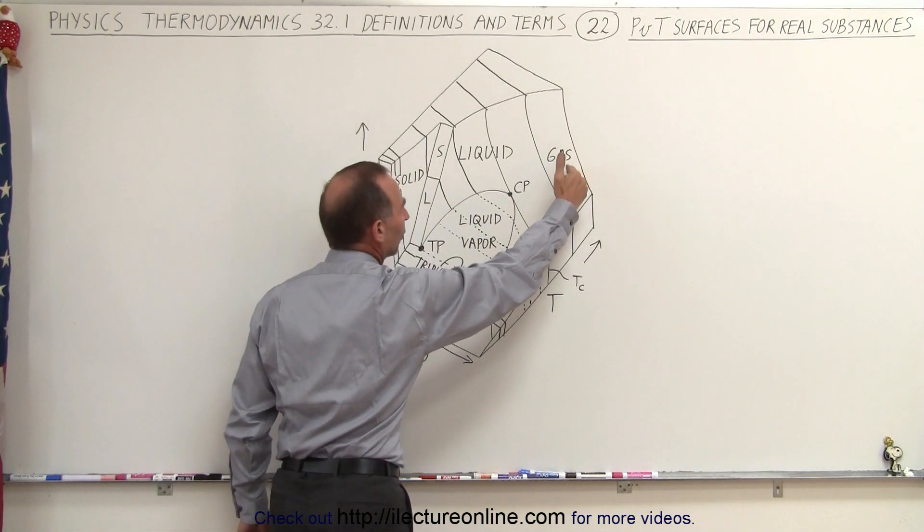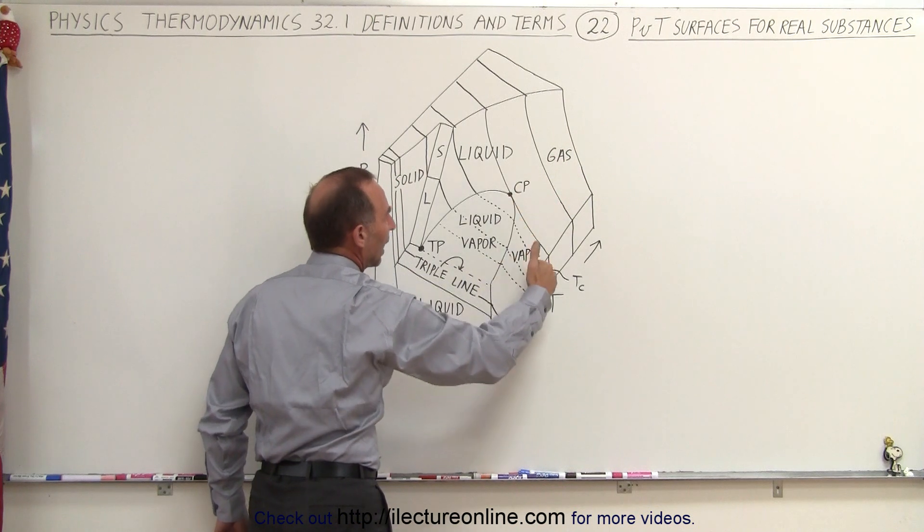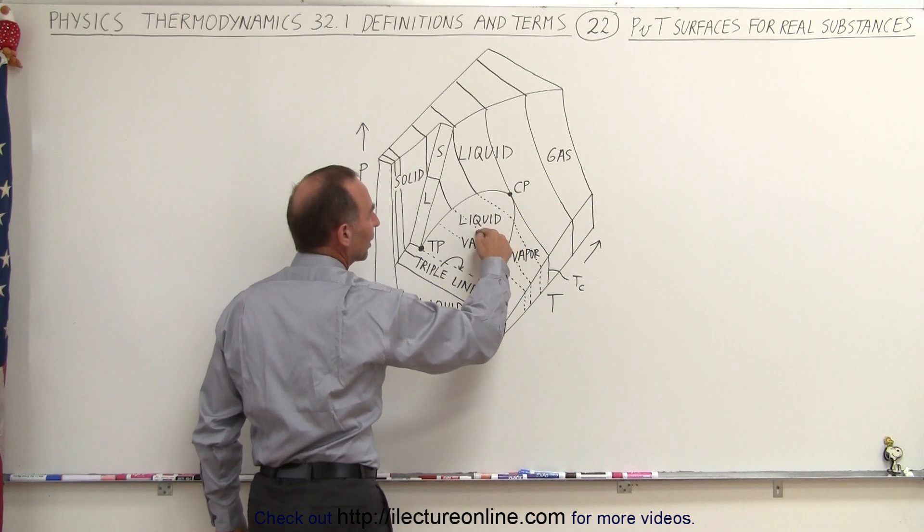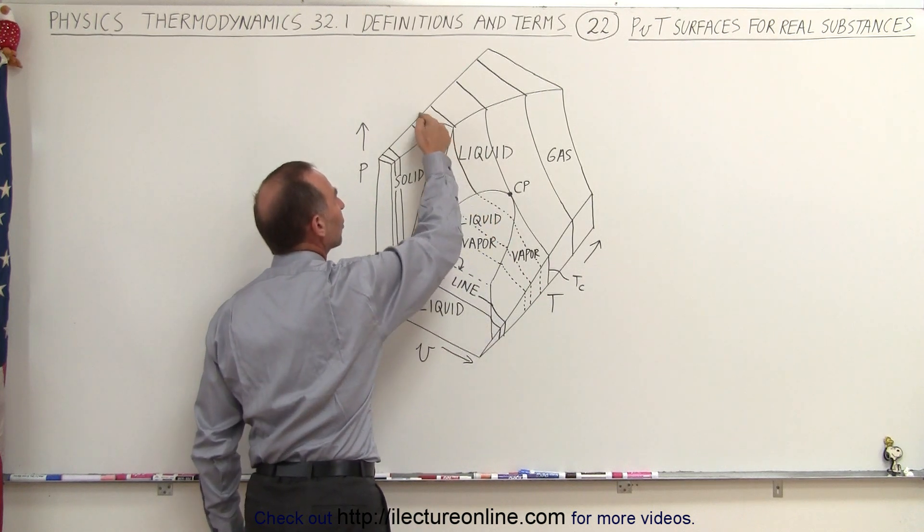As the temperature becomes sufficiently low and we increase the pressure, we go from a vapor state into a liquid state and then into a solid state.